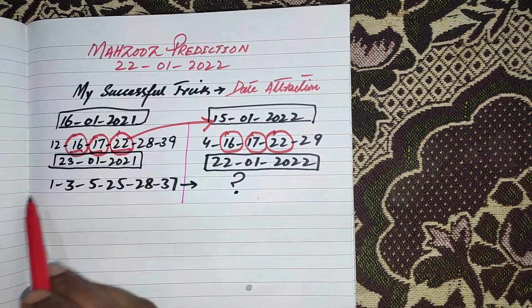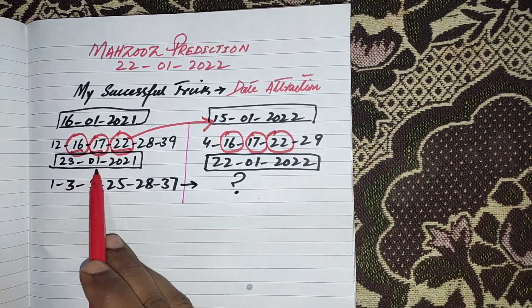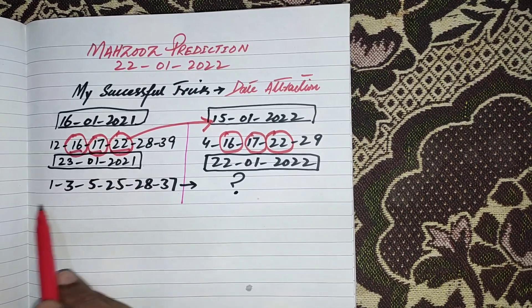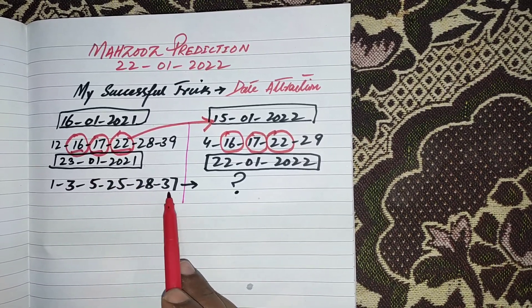This is past year result which was drawn on 23rd January 2021: 1, 3, 5, 25, 28 and 37.